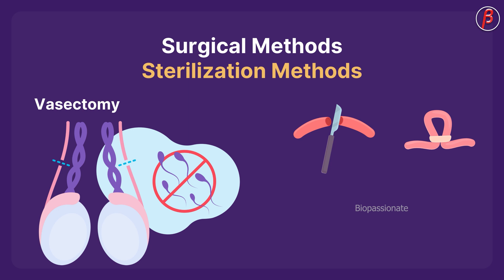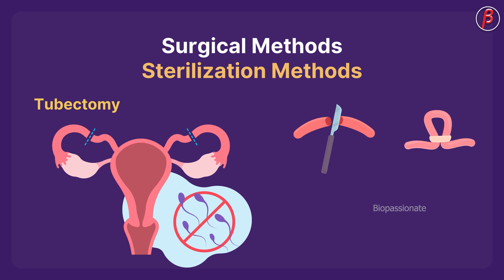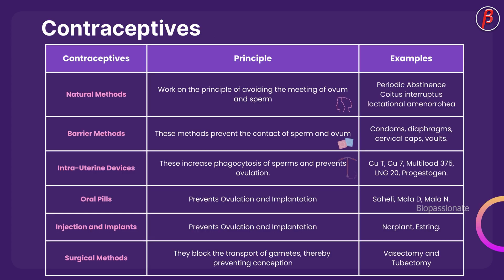The sterilization procedure in the male is called vasectomy. In vasectomy, a small part of the vas deferens is removed or tied up through a small incision on the scrotum. The sterilization procedure in the female is called tubectomy. In tubectomy, a small part of the fallopian tube is removed or tied up through a small incision in the abdomen or through the vagina. A summary table covering the complete concept of contraception is provided for reference.